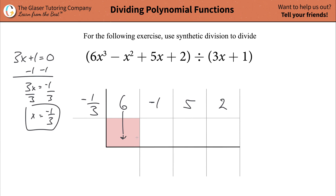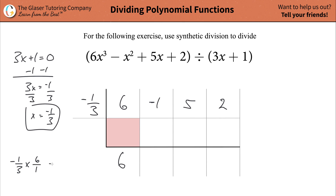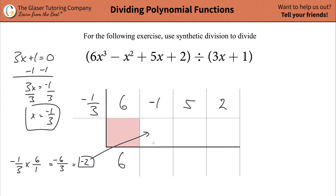First step is just drop down whatever value that is to the bottom. There's a red box here because you're not going to put anything in it. Now take this value at the bottom and multiply it by the term on the outside. You can write that out on the side if you like — negative one third multiplied by six, which is the same thing as six over one. So plug in a negative two.